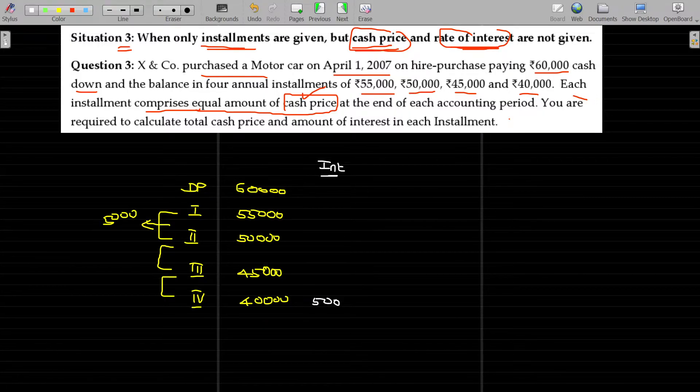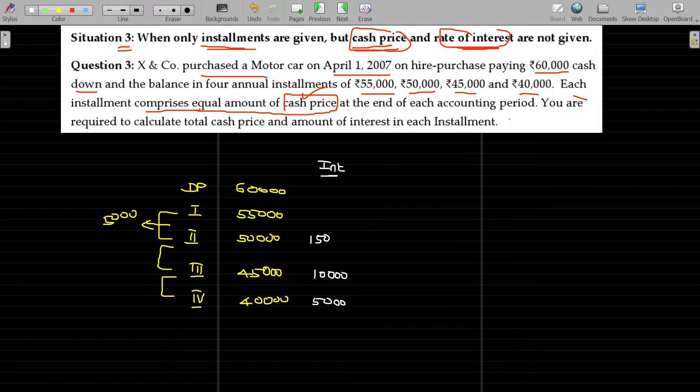Interest is 5,000. For the last but one installment, 5,000 times 2, which is 10,000. For 3 installments, 15,000, and for 4 installments, 20,000. Down payment, of course, interest will not be there.